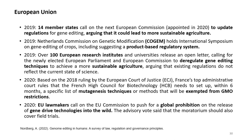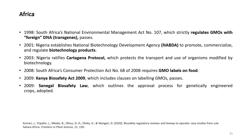In Africa, various developments have taken place. From 1998, through the National Environmental Management Act No. 107, South Africa strictly regulated genetically modified organisms with foreign DNA. In 2001, Nigeria established the National Biotechnology Development Agency to promote, commercialize and regulate biotechnology products, and ratified the Cartagena Protocol in 2003. In 2008, South Africa's Consumer Protection Act No. 68 was passed requiring GMO labels on food. In 2009, the Kenya Biosafety Act was passed including clauses on labeling GMOs, and the Senegal Biosafety law also outlined the approval process for genetically engineered crops.